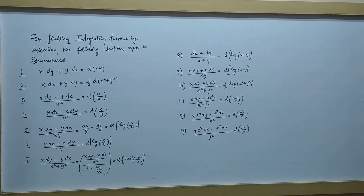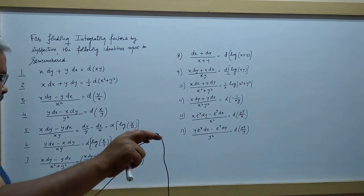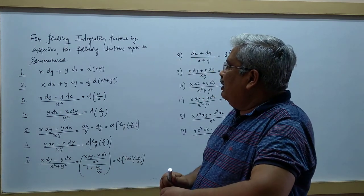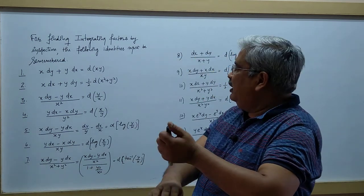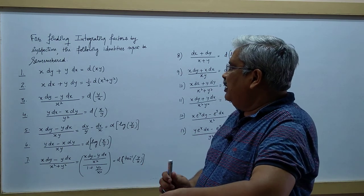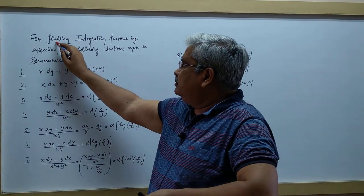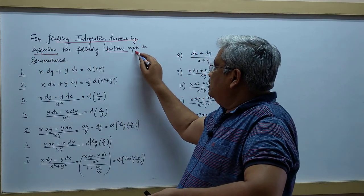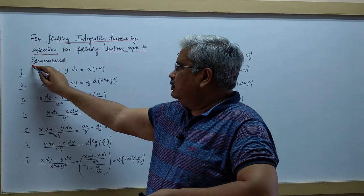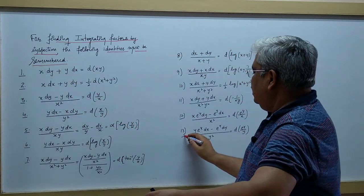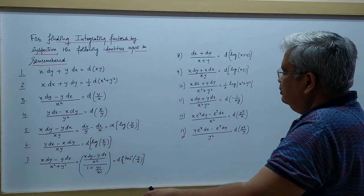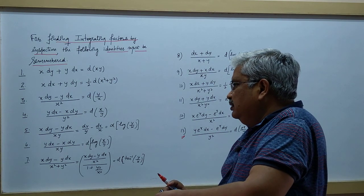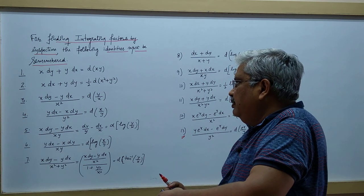After the Lampetus Rule, I have given you the next video on finding integrating factors simply by inspection. The following 13 identities must be remembered. If you practice all these identities, this will be very useful in calculating sums, especially in competitions.